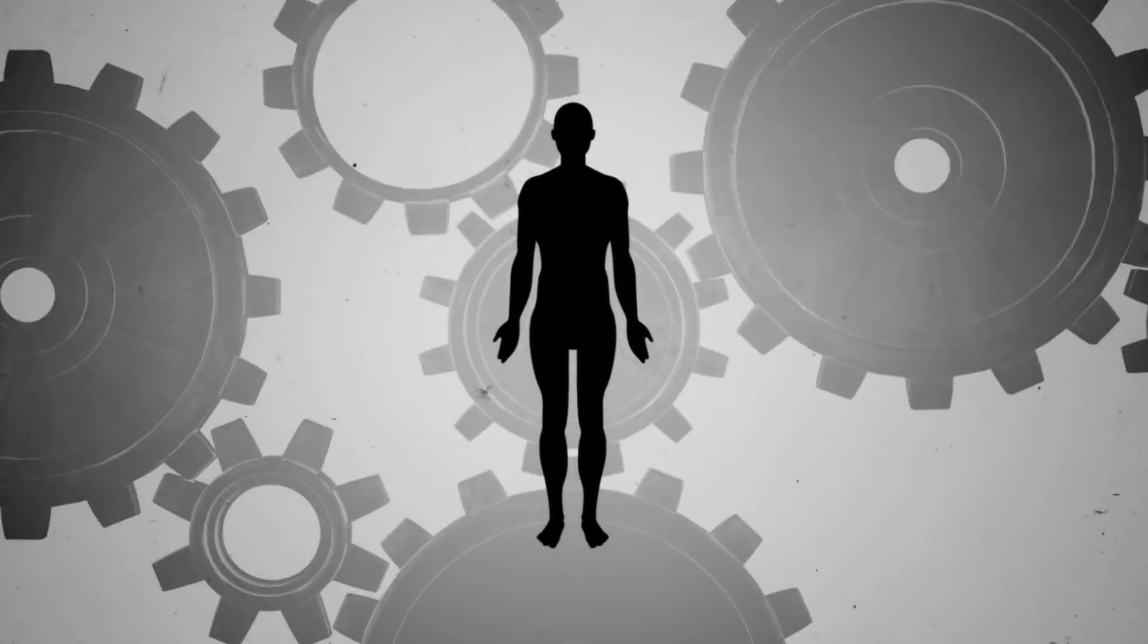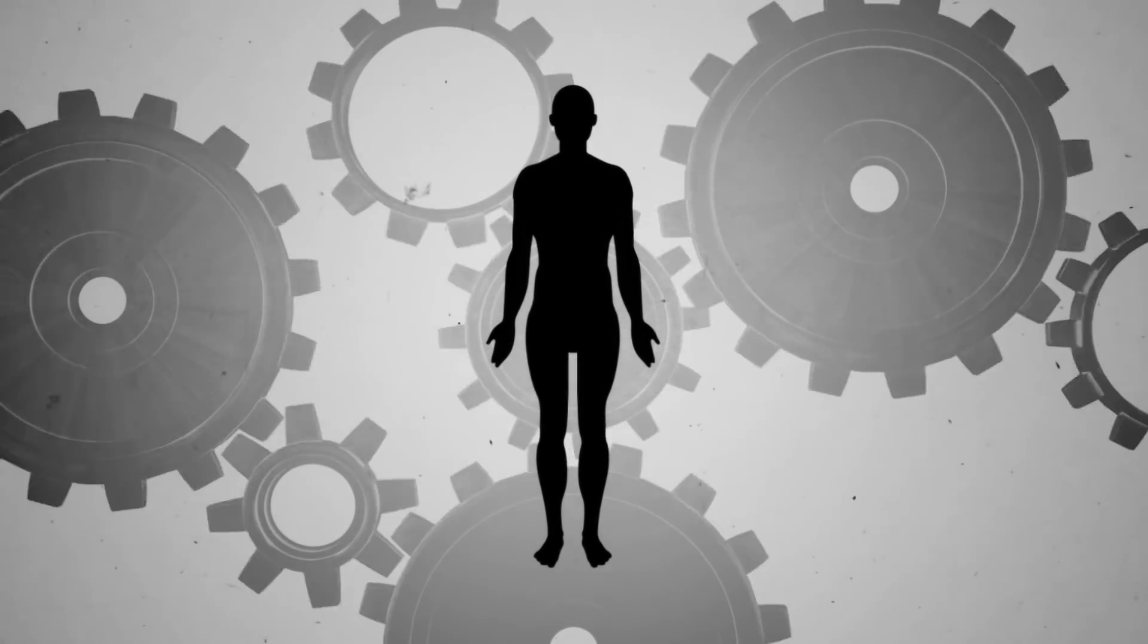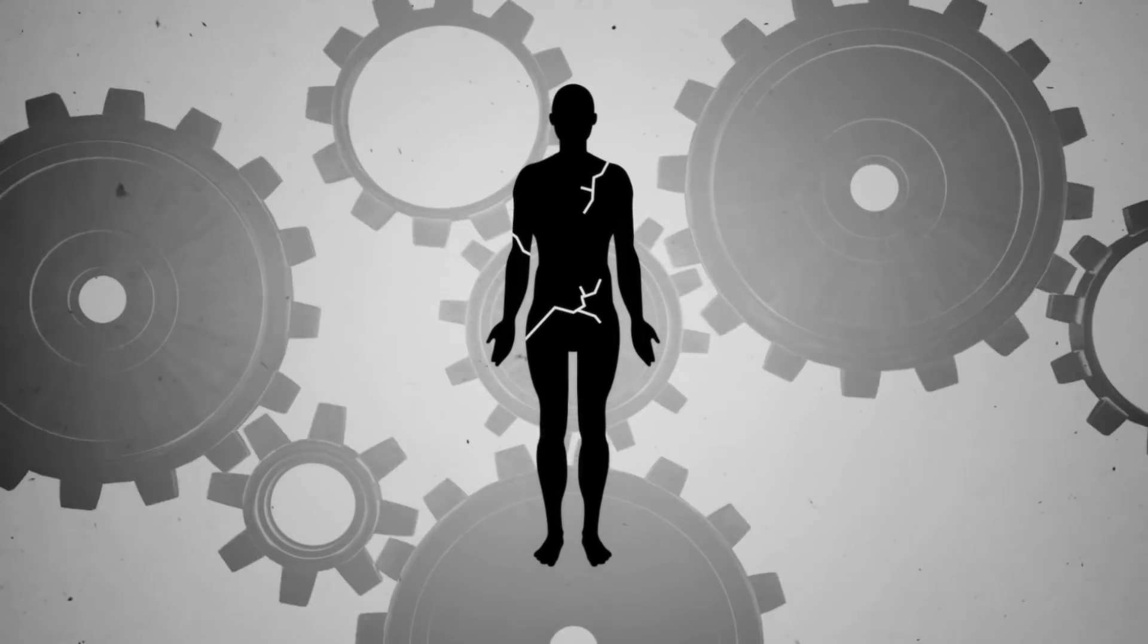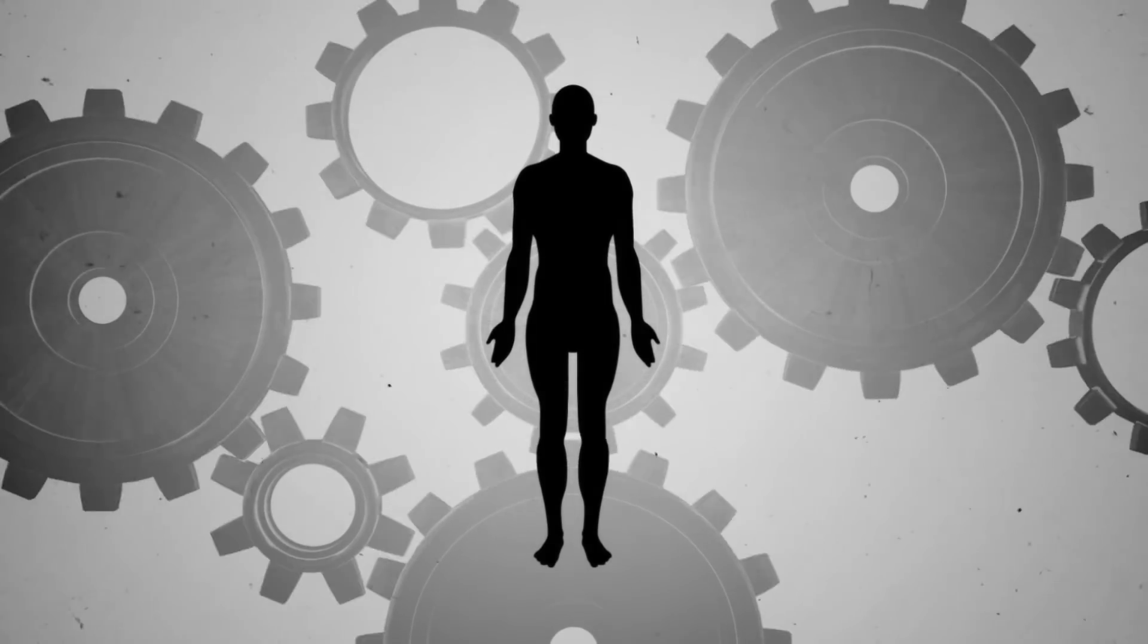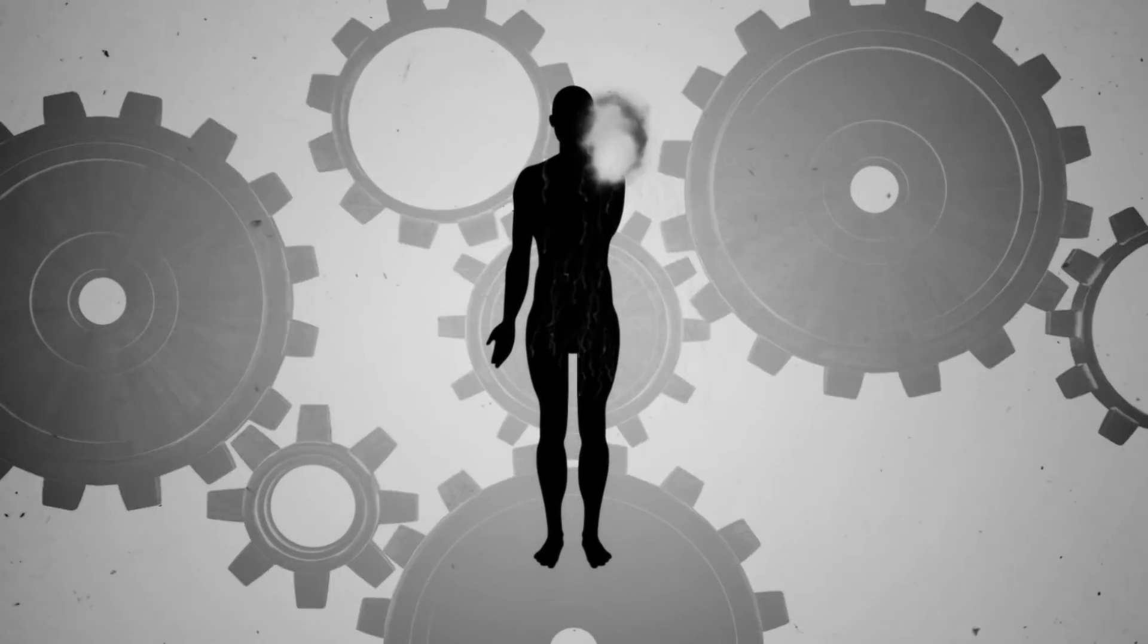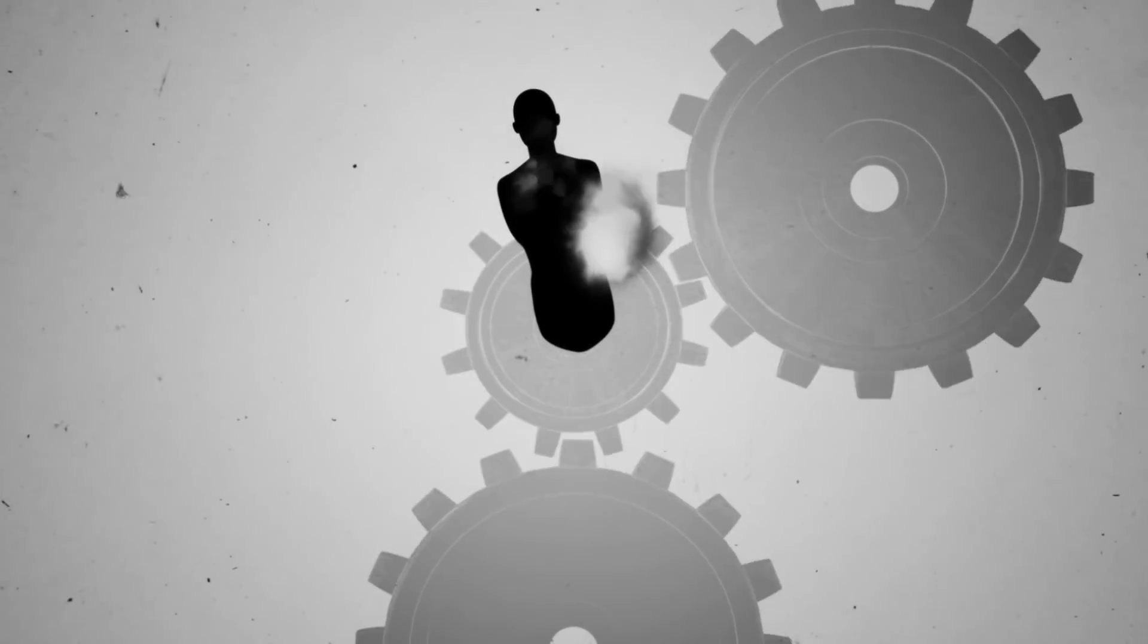According to de Grey, the human body is a machine. Like any machine, it accumulates damage over time. The body's self-repair machinery can tolerate a lot of that damage. But too much damage, and things start to fall apart, resulting in the hardening of arteries, dementia, brittle bones, and diseases and disabilities of old age.